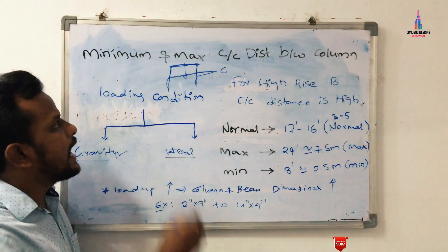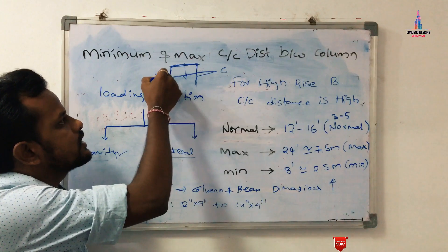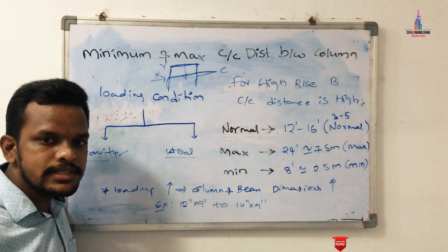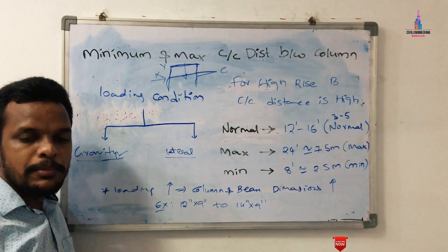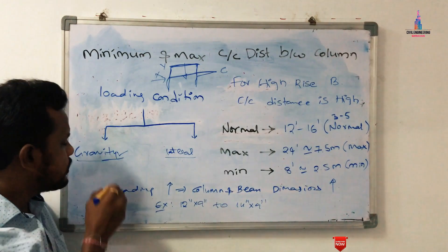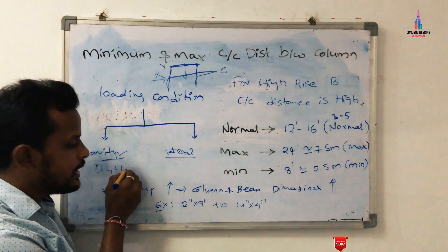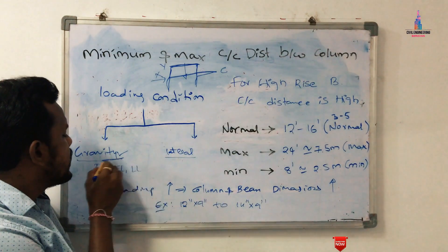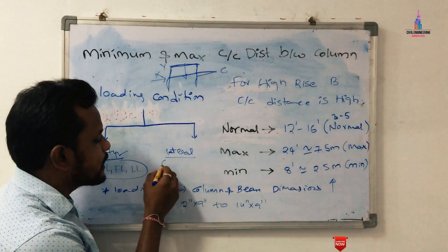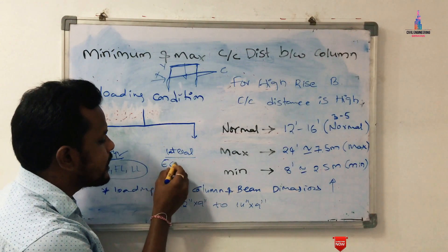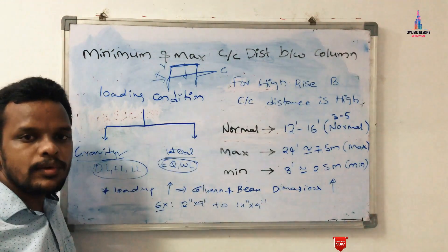Loads acting in the horizontal direction in both X and Y directions are called lateral loading conditions. The load cases related to dead load, floor load, and live load come under gravitational forces. Load cases related to seismic loading condition and wind loading condition are considered as lateral loading conditions.